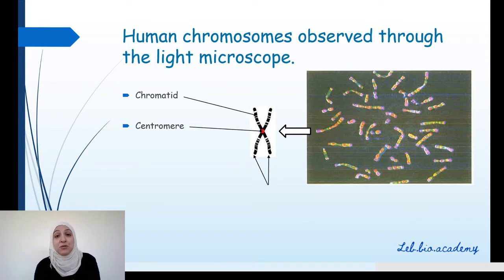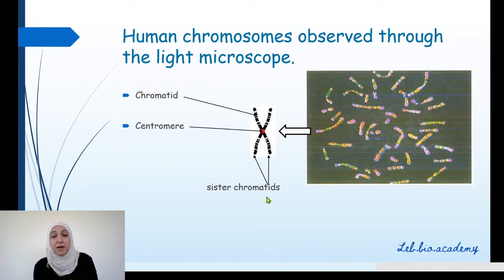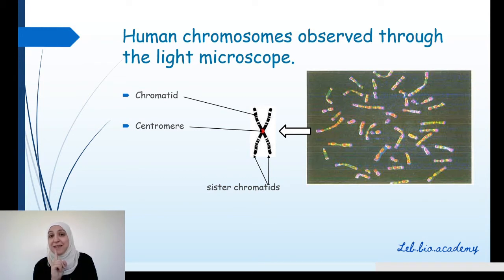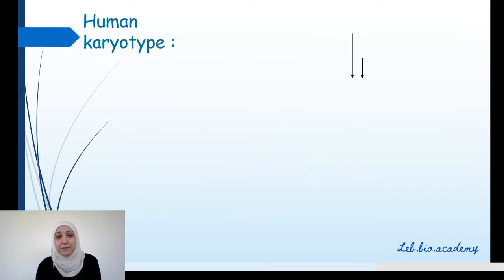The two chromatids of the same chromosome connected by a centromere are called sister chromatids. So the sister chromatids are the two chromatids of a single chromosome.